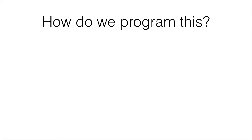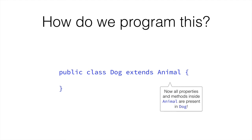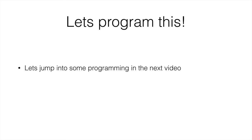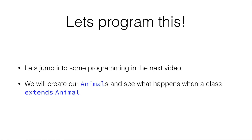So how do we program inheritance when a class extends another? As I've been putting in the slides, the keyword 'extends' has been highlighted in blue and a special font. In order to extend something, we simply write our class — for example, 'public class Dog' — and then what it extends: 'extends Animal'. Now all properties and methods inside Animal are copied into Dog without you having to do it. Let's jump into a programming video and try to create some classes, make some extensions, and see what happens. We'll create an Animal and see when we create a Dog and extend Animal what properties and behaviour it inherits, and try to clear out any doubts you may have. Stick with me and let's go into the next video.